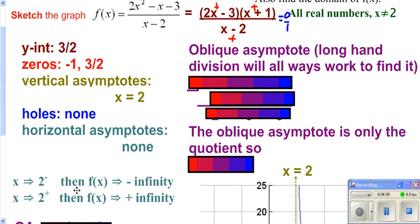Well, we still need to go ahead and find our oblique asymptote. Longhand division will always, always work to find your oblique asymptote. And it's really just the quotient after you divide. We're not concerned about the remainder.